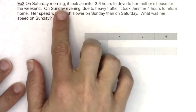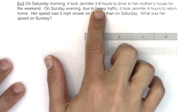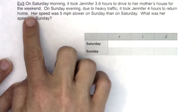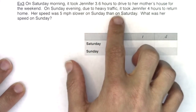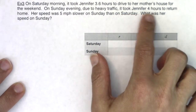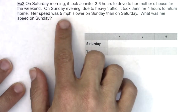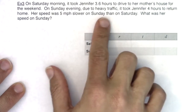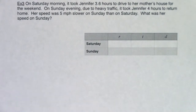On Saturday morning, it took Jennifer 3.6 hours to drive to her mother's house for the weekend. On Sunday evening, due to heavy traffic, it took Jennifer 4 hours to return home. Her speed was 5 miles an hour slower on Sunday than on Saturday. What was her speed on Sunday?